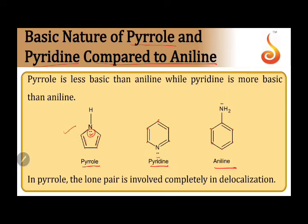When you count the electrons including that lone pair, you get six pi electrons, satisfying Hückel's rule. In pyridine, the lone pair is not required for conjugation — pi bond, single bond, pi bond, single bond, pi bond, single bond. Even leaving out the lone pair, there are still three pi bonds giving six pi electrons, so pyridine is aromatic without using that lone pair.